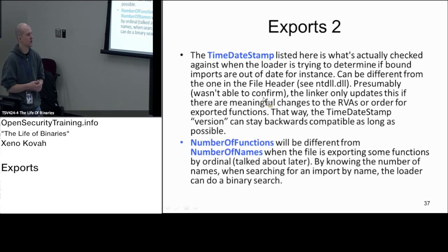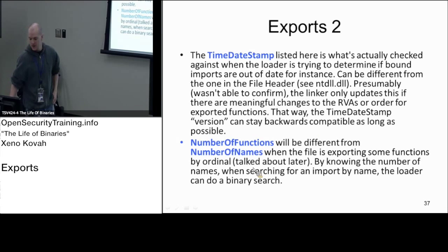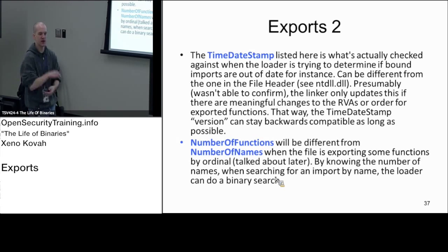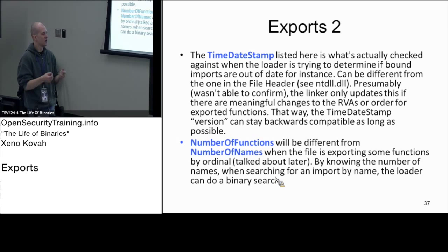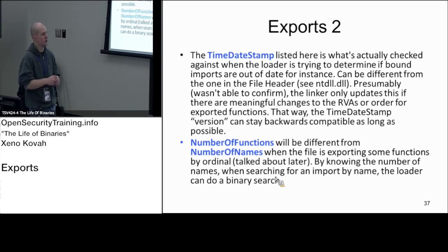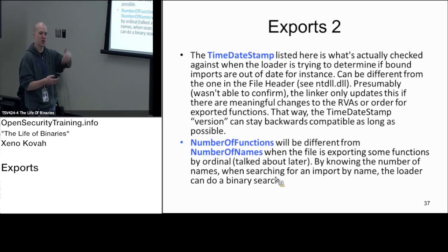So that's pretty simple — it just relates to whether anything about the exports information changed; if it does, update that time date stamp. Number of functions and number of names will differ when you're doing import by ordinal. Typically a binary will have the exact same number of functions as number of names because it exports all its functions by name. But if it allows importing by ordinal, you can actually have more functions than names — there will be some functions you can't call by name; you have to call them by ordinal.